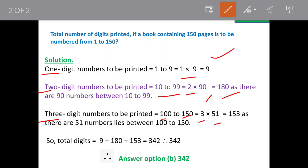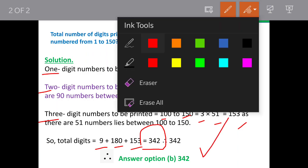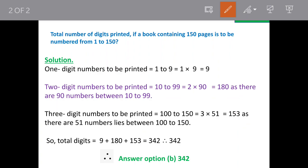So total number of digits will be 9 plus 180 plus 153 is equal to 342. Option b, 342 is the answer.